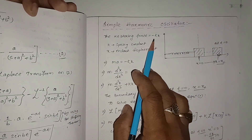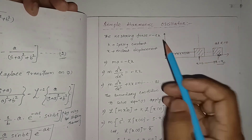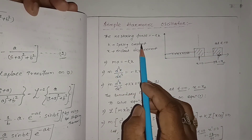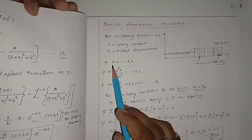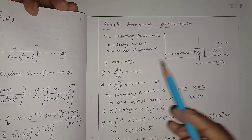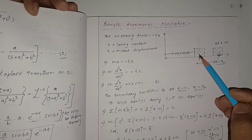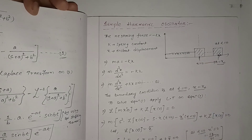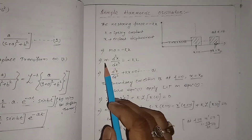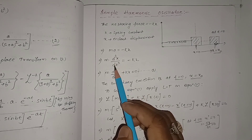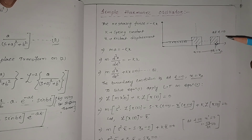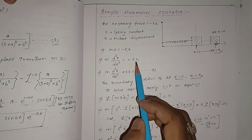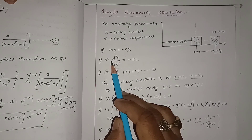The restoring force is minus kx, meaning it is inversely proportional to displacement. Here k is the spring constant and x is the instantaneous displacement. This force equals mass times acceleration of the body, so m times a is written as d²x/dt², because the body is oscillating along the x-axis with a particular displacement at each instant.